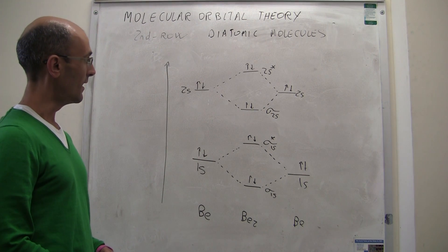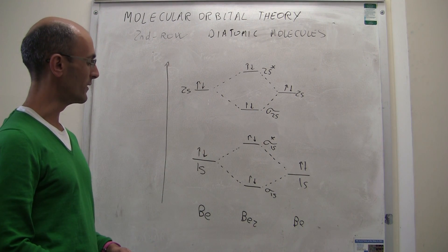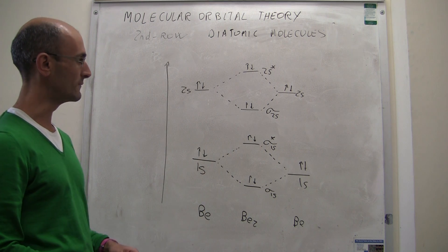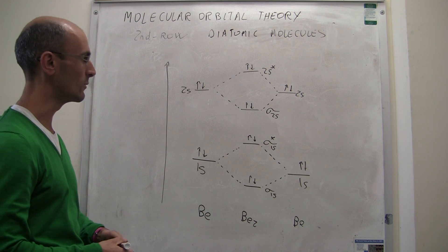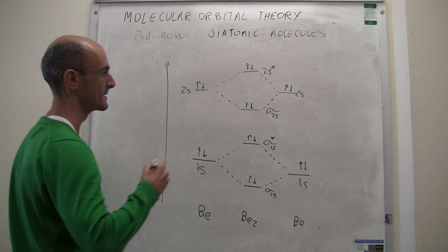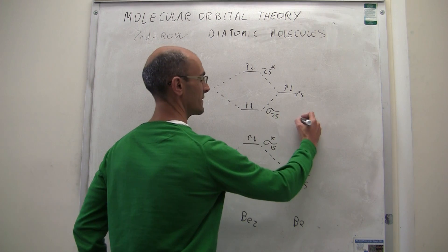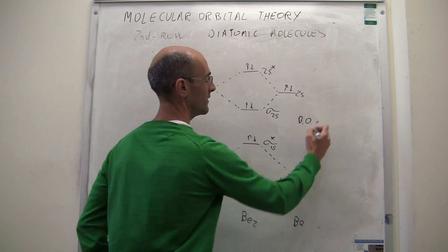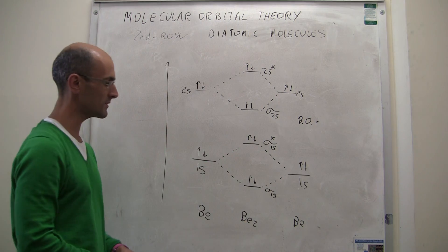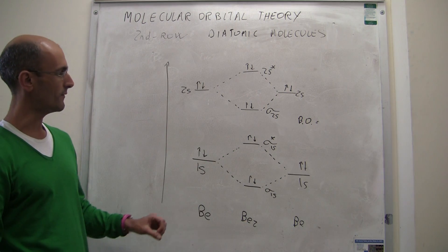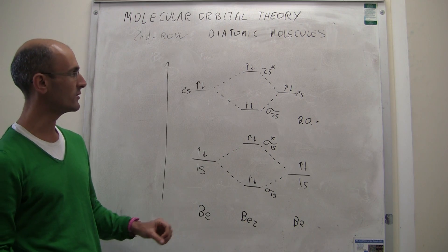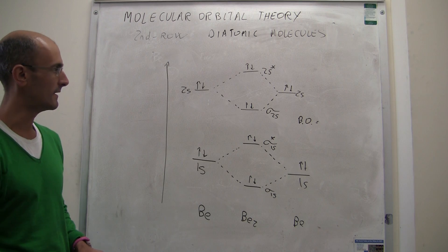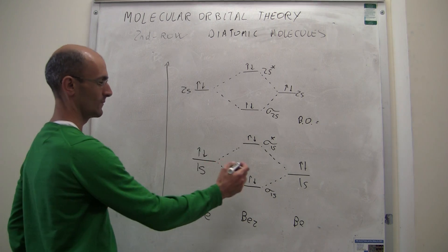That is the molecular orbital theory diagram for the beryllium-2 molecule, and the last thing we have to do here is calculate what the bond order is. The bond order is going to be the number of bonding electrons minus the number of electrons in antibonding orbitals, divided by 2.